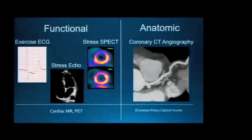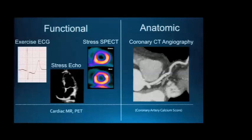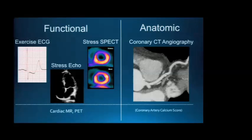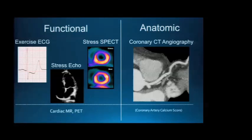When talking about functional versus anatomic testing, from a functional standpoint the three most commonly used tests in the US are the exercise ECG, stress SPECT myocardial perfusion scan, and stress echo. Other functional tests include cardiac MR and PET scanning, but those are less commonly used. From an anatomic standpoint, we're primarily talking about the coronary CT angiogram, which is distinct from the coronary artery calcium score.